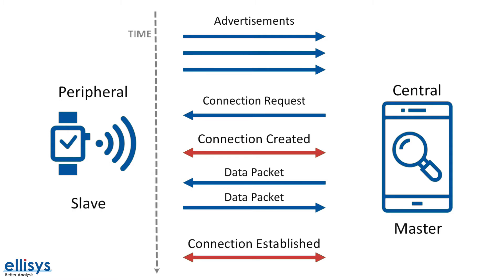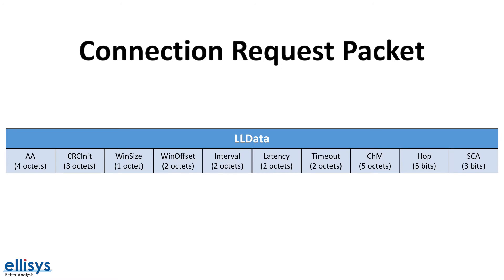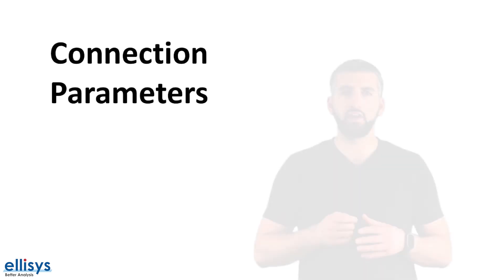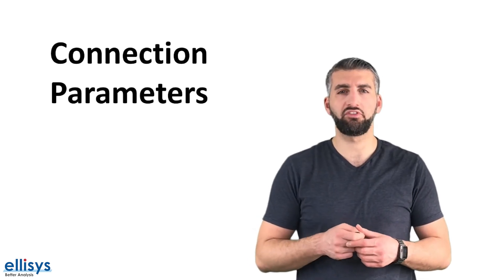A connection request packet looks like this. It includes a few important parameters needed to keep the connection synchronized and persistent between the two devices, such as the connection interval, the slave latency, the supervision timeout, the channel map, and the hop sequence. Now let's look at each of these connection parameters in more detail.